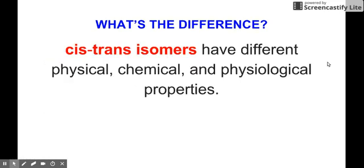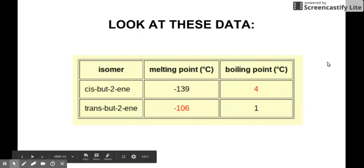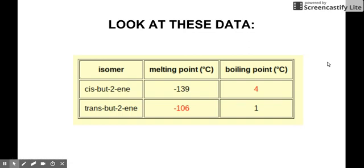So therefore, cis and trans isomers have different physical, chemical, and physiological properties. Now, let's look at two of these properties: melting point and boiling point. We see that for melting point, trans-but-2-ene has a higher melting point compared to cis-but-2-ene. For boiling point, however, cis-but-2-ene is higher in boiling point compared to the trans-but-2-ene.